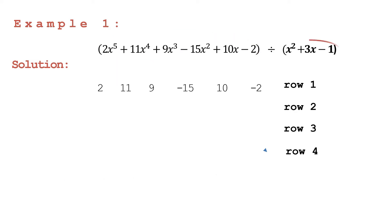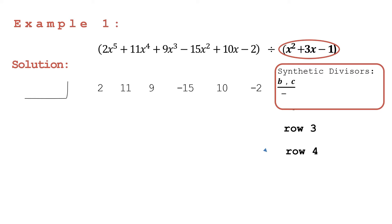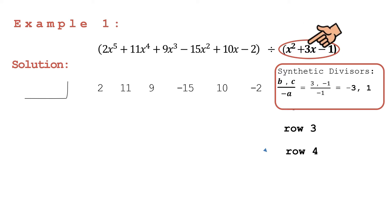To get the numerical coefficients of your divisor, we have to follow this formula: b divided by negative a, and then c divided by negative a. The values of a, b, and c are found in your quadratic divisor. The value of a is the numerical coefficient of x squared, b is the numerical coefficient of x, and c is the constant. So we have a is equal to 1, b is equal to 3.